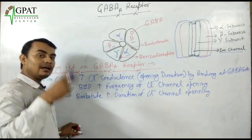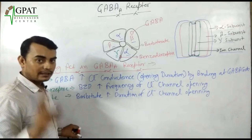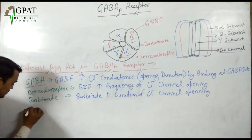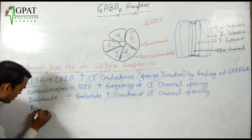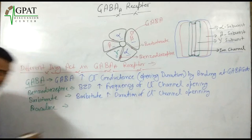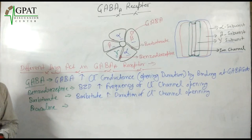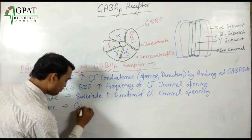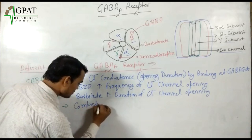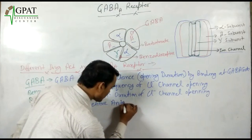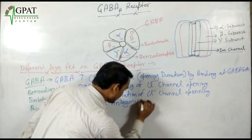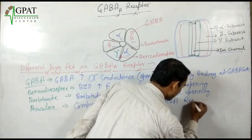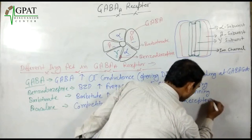While benzodiazepine cannot directly open the channel — it only increases the frequency of channel opening. That is the main difference. Your next drug is bicuculline. Bicuculline is the competitive antagonist of the GABA receptor.